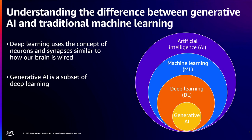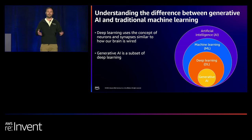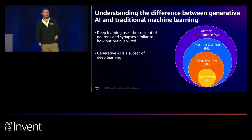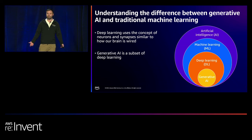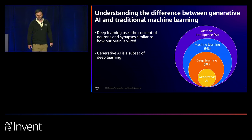Before we dive in, let's unpack and broadly define some terms we see in the headlines: artificial intelligence, machine learning, and deep learning. Artificial intelligence is almost like an umbrella term for systems that can think, act, reason, or do tasks that previously required human judgment. Machine learning is a subset of AI — taking data to train models to recognize patterns and make predictions on new data.